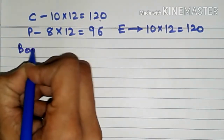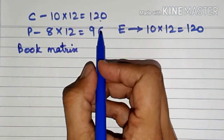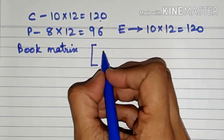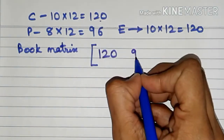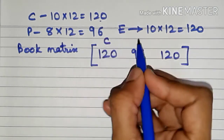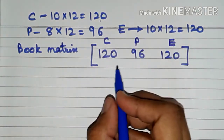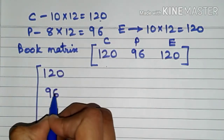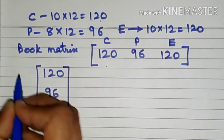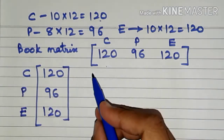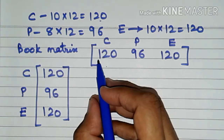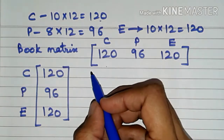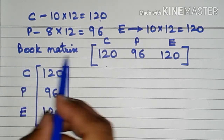We will have a book matrix containing the number of chemistry, physics, and economics books. It can be arranged as a row matrix: [120, 96, 120] with one row and three columns. Alternatively, it can be a column matrix with entries 120, 96, and 120 in separate rows. The first entry is chemistry, the second is physics, and the third is economics. We can choose either form.